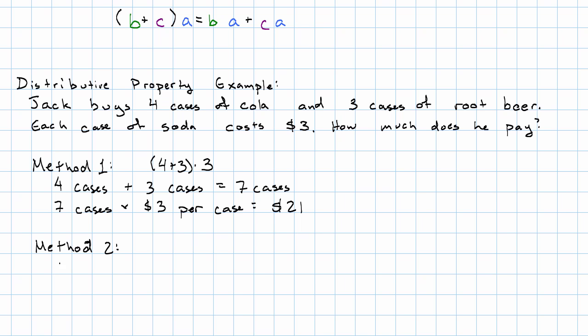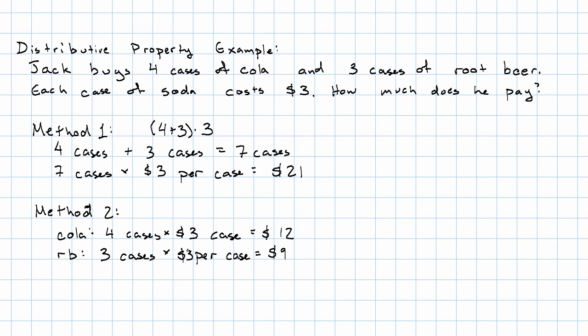Method two would be to say, for the cola, we have four cases times three dollars per case is twelve dollars. For the root beer, three cases times three dollars per case is nine dollars.